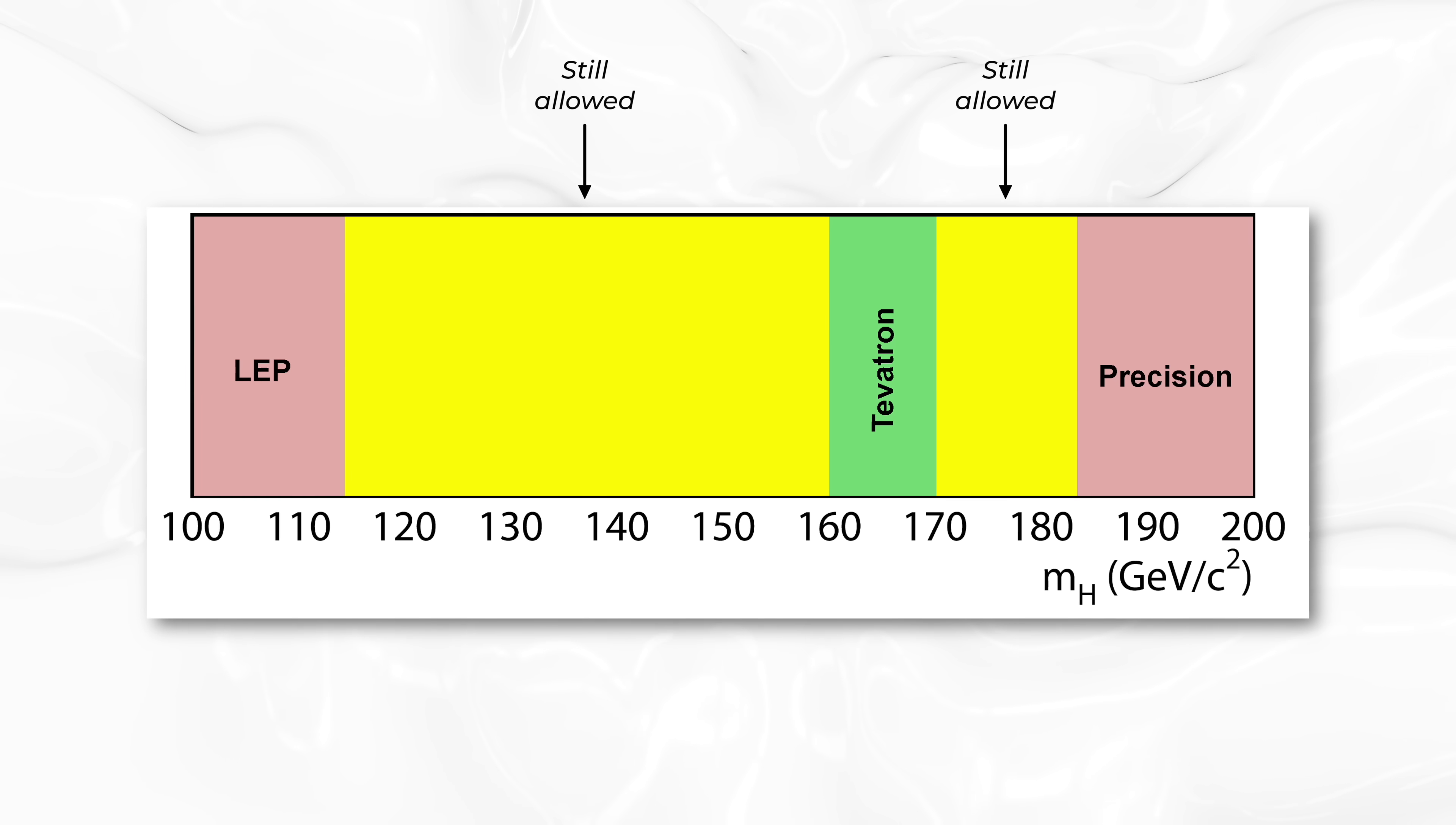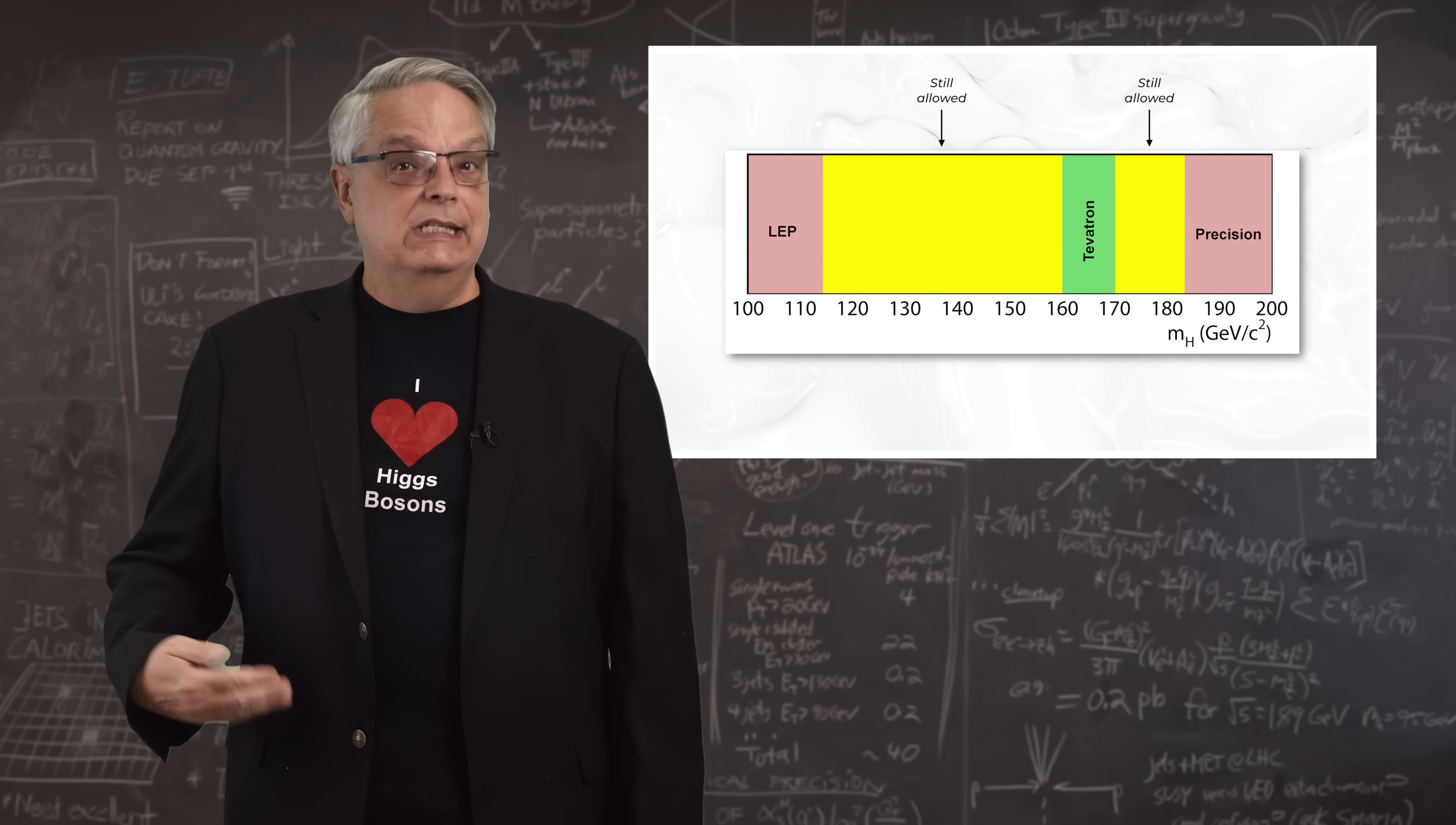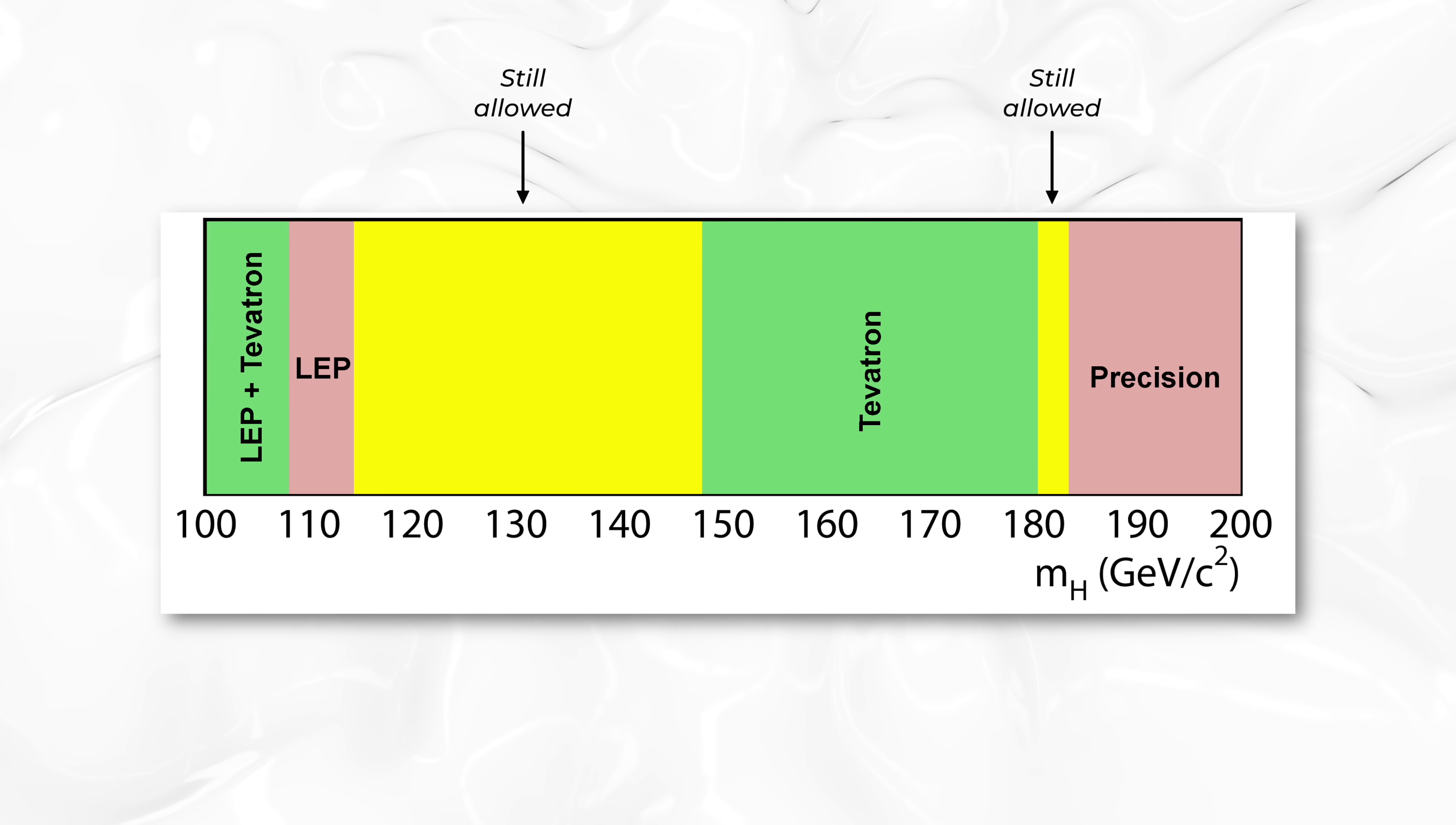So, back in 2009, measurements from the Fermilab Tevatron ruled out the range of 160 to 170 as possible masses for the Higgs boson. Of course, we didn't stop there. We continued to collect data and do more analysis.